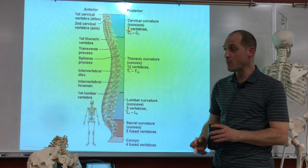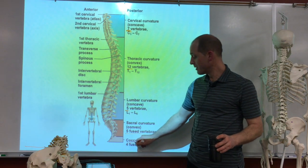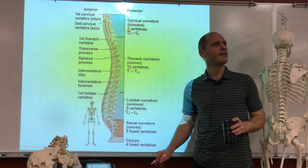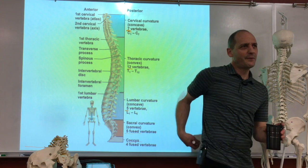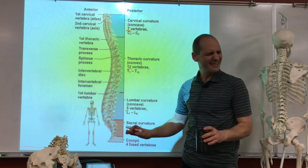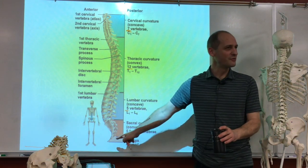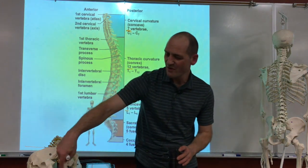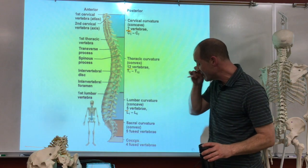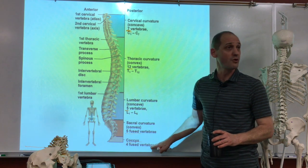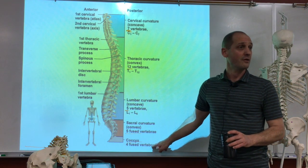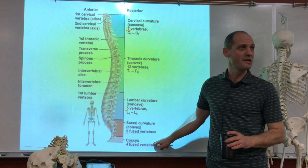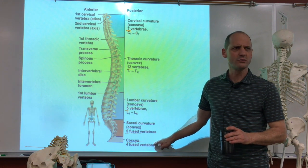The coccyx is a very small little sliver thing — we don't really study much about it. It's also four fused original vertebrae. Your cat's tail has little vertebrae in it, so be careful about that — don't twist it, it hurts.